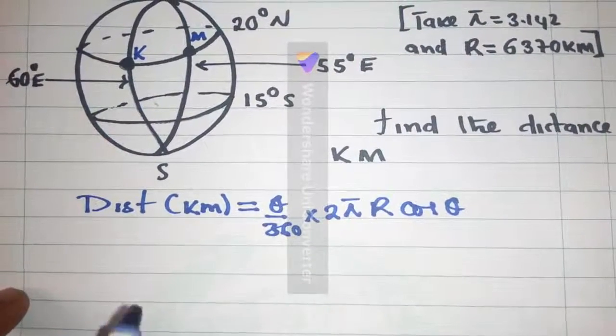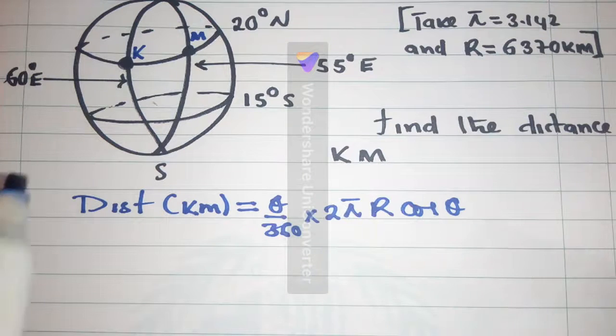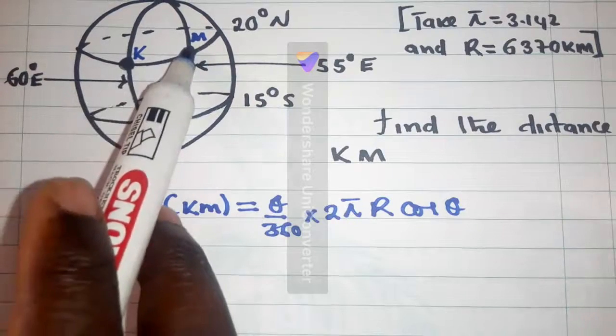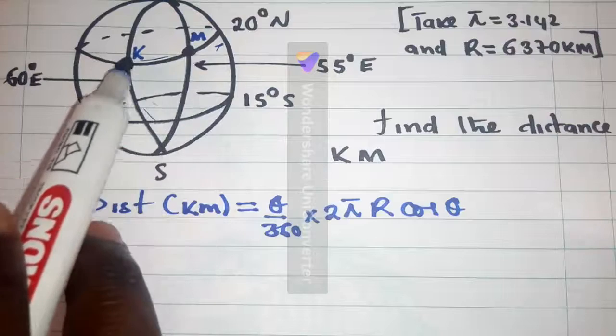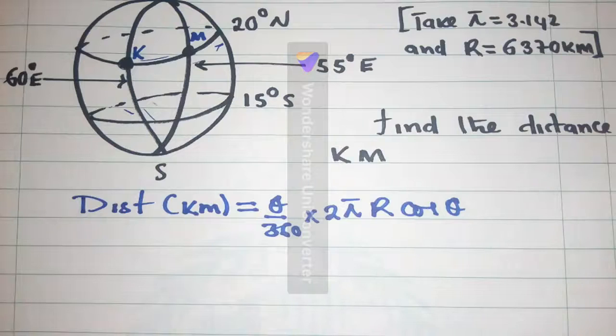So, our theta, the same way we did finding the theta along the longitude, it's the same way we're supposed to do for latitude. So, for latitude, you check the longitudes which are cutting this latitude where the distance is happening. So, here it's 60 degrees, and here it's 55 degrees east.